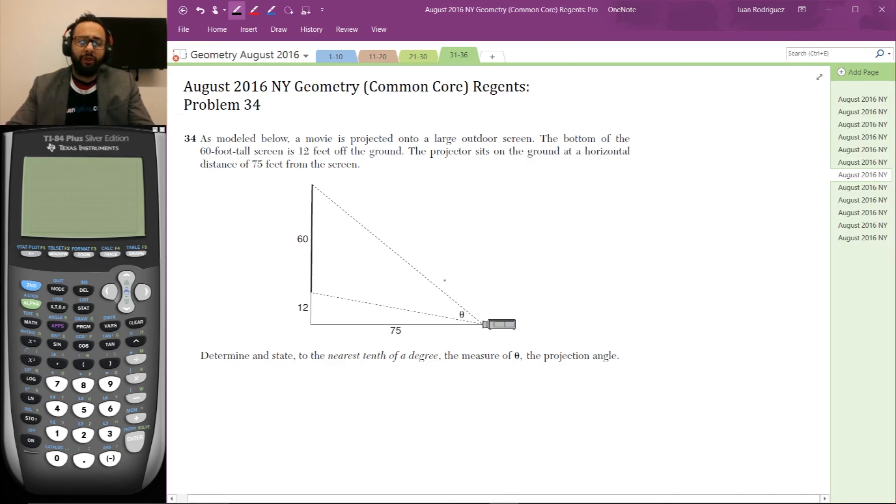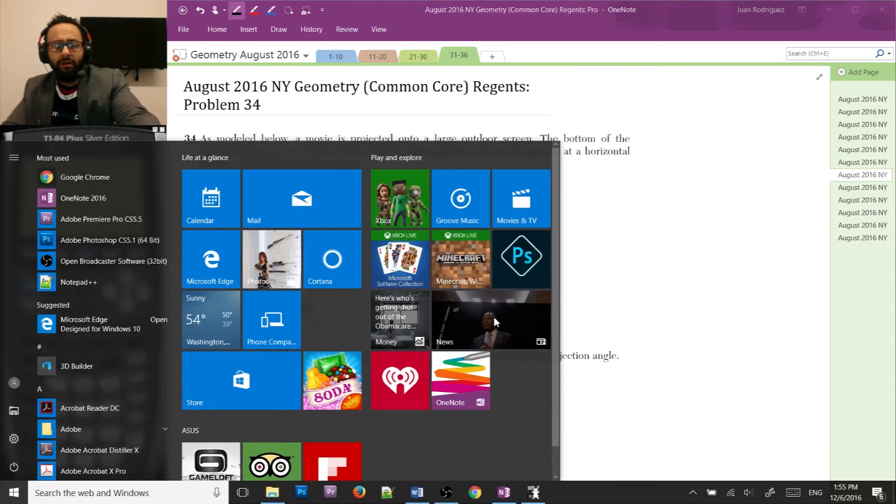Here's what we do. First off, we notice that this angle is pretty small. Everything looks like it's drawn to scale. This 12 looks like it's about a fifth of 60. This 75 looks like it's about the same height as this triangle, maybe a little bit bigger, which is what it should be. So this angle should be fairly small. It's definitely less than 45 degrees.